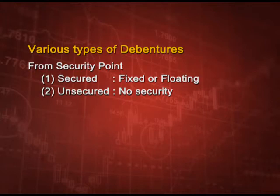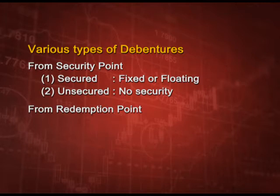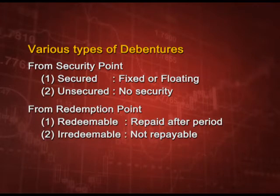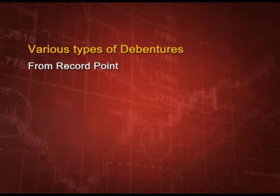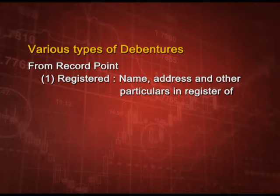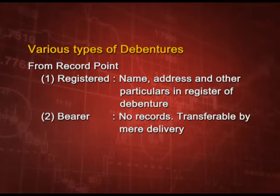From the redemption point of view, debentures which are to be repaid are called redeemable and those which are not repayable are called irredeemable. From a record point of view, there can be registered debentures and bearer debentures. Registered debentures are those where name, address, and all other particulars are recorded in the register of debentures. Bearer debentures have no such records; they are transferable by mere delivery, and whosoever holds the debenture is the owner.